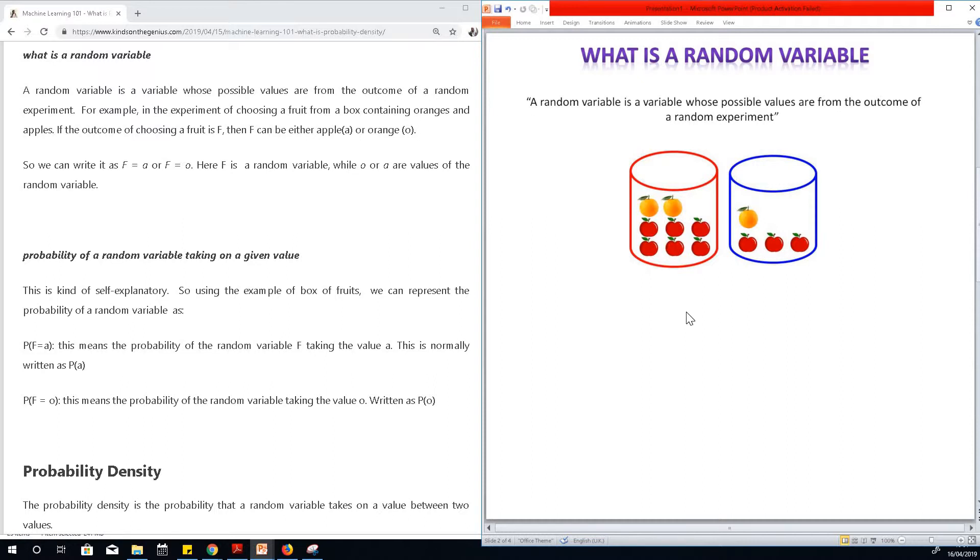What will the output be? What will be the possible outcome of this random experiment? A random variable is a variable whose possible values are the outcome of a random experiment.